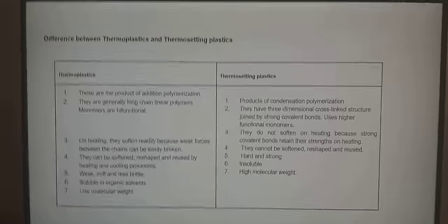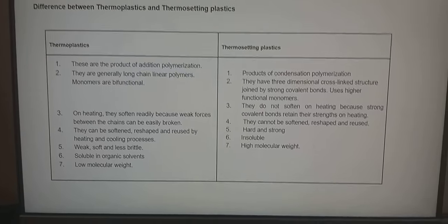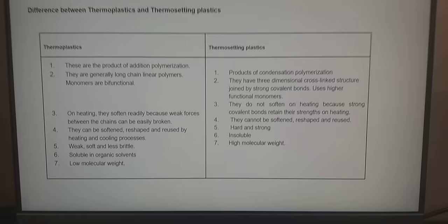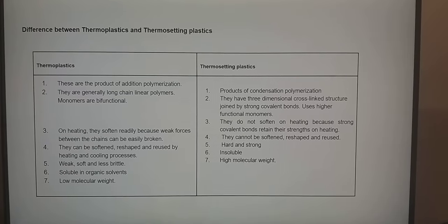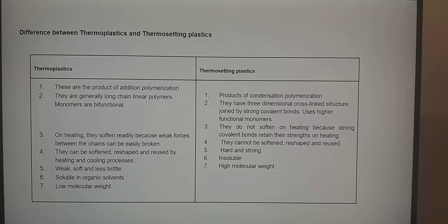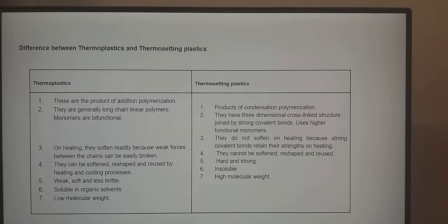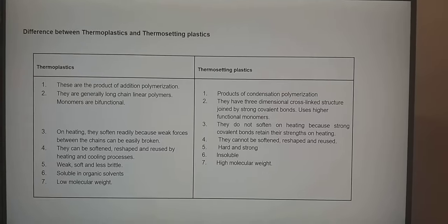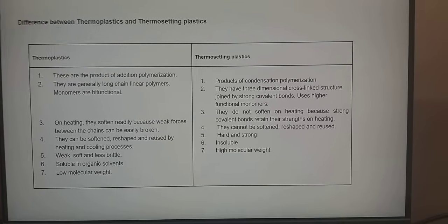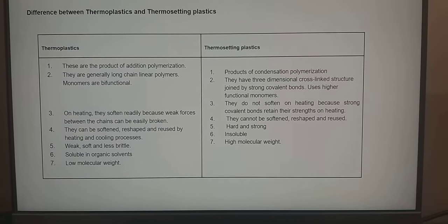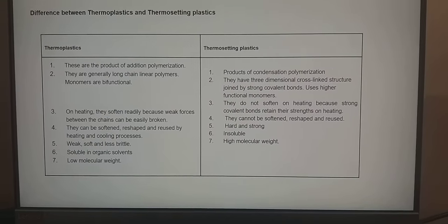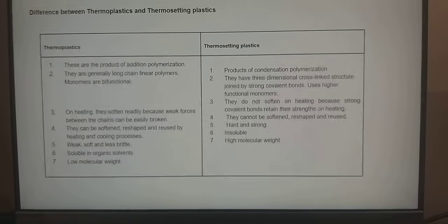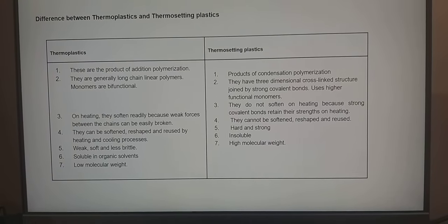Comparing thermoplastics and thermosetting plastics: thermoplastics are the product of addition polymerization, while thermosetting plastics are the product of condensation polymerization. Thermoplastics are generally long-chain linear polymers with bifunctional monomers. Thermosettings have three-dimensional cross-linked structures joined by strong covalent bonds, using higher functional monomers. Thermoplastics soften on heating because weak forces between chains are easily broken, whereas thermosettings do not soften on heating because strong covalent bonds retain their strength. Thermoplastics can be softened, reshaped, and reused; thermosettings cannot.